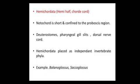Acraniata is divided into three sub-phyla: Hemichordata, Urochordata, and Cephalochordata. In Hemichordata, 'hemi' means half, 'chorda' means chord, so the notochord is short and confined to the proboscis region. The proboscis is the anterior portion of the body. These organisms are deuterostomes, meaning the blastopore is developed into the anus. Nowadays, Hemichordata is placed as an independent invertebrate phylum.